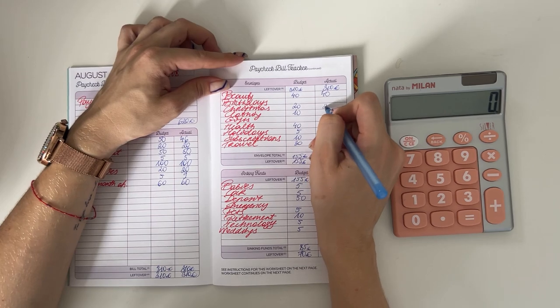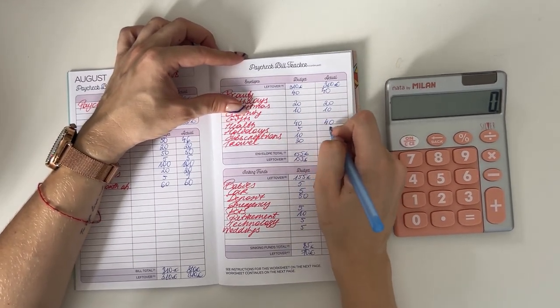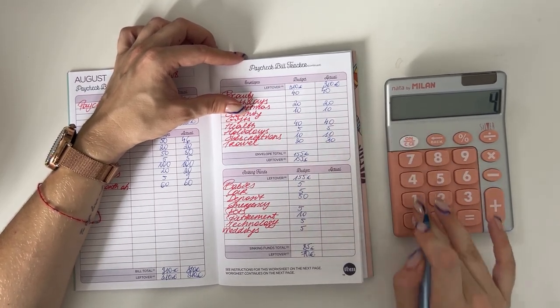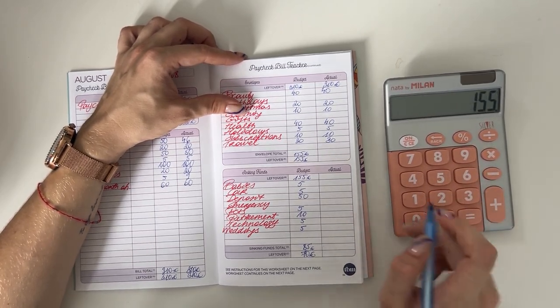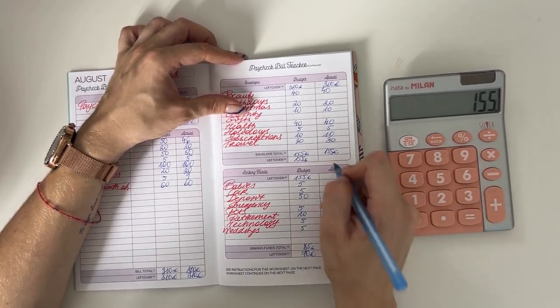So stayed the same. We put €40 in beauty, €20 in Christmas, €10 in clothing, €40 in health, €5 in holidays, €10 in subscriptions, and €30 in travel. So 40 plus 20 plus 10 plus 45 plus 40 is €155. So €310 minus €155 is €155.